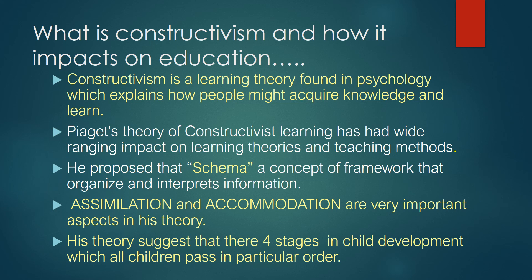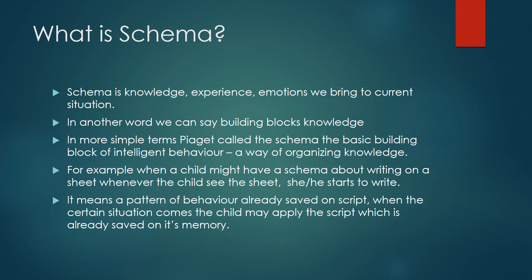His theory suggests there are four stages in child development which all children pass through in a particular order. First of all, we need to understand what schema is. Schema is the knowledge, experience, and emotions we bring to a current situation — in other words, the building blocks of knowledge. In more simple terms, Piaget calls schema the basic building block of intelligent behavior, a way of organizing knowledge.